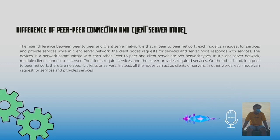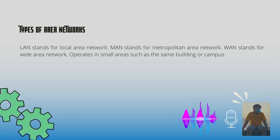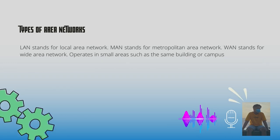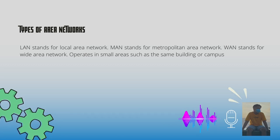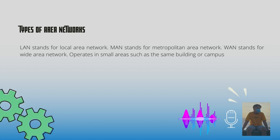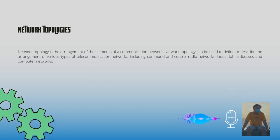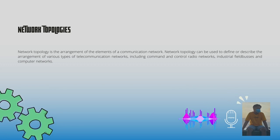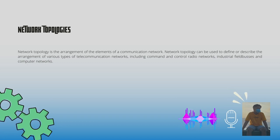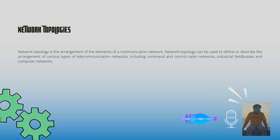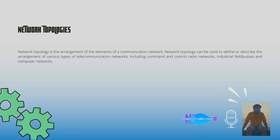LAN stands for Local Area Network, MAN stands for Metropolitan Area Network, and WAN stands for Wide Area Network. A LAN operates in small areas such as the same building or campus. Network topology is the arrangement of the elements of a communication network, and can be used to define or describe the arrangement of various types of telecommunication networks, including command and control radio networks, industrial field buses, and computer networks.